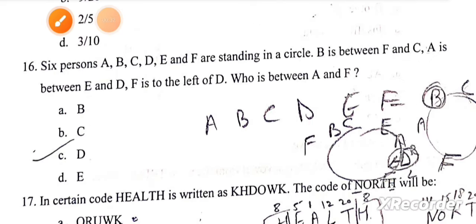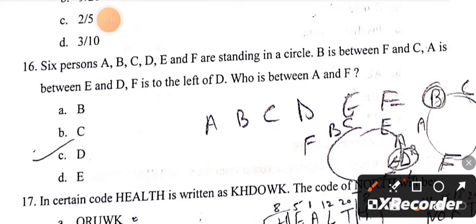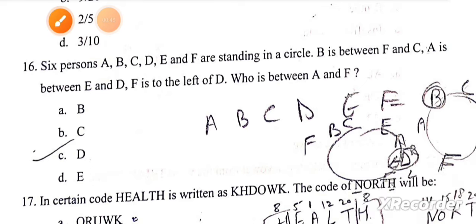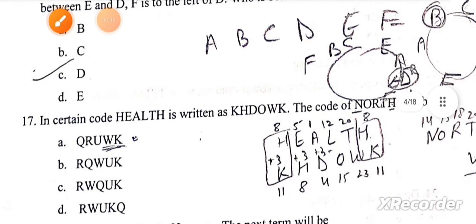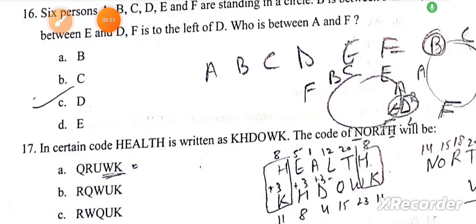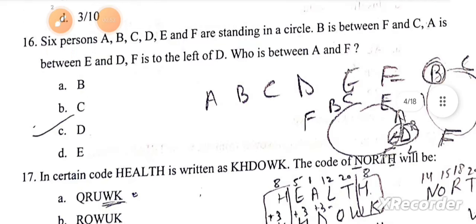Next is six persons A, B, C, D, E and F are standing in a circle. B is between F and C, and A is between E and D. F is to the left of D. Who is between A and F? The correct answer is D, because A and F is asked, it will be D.